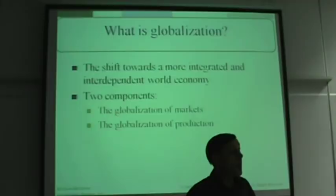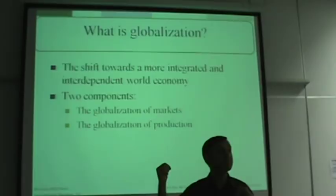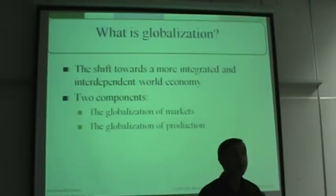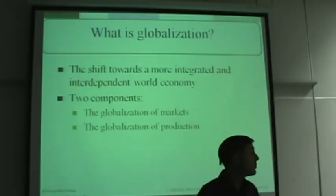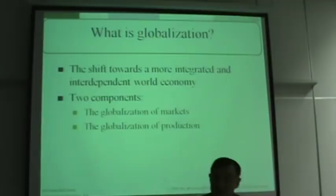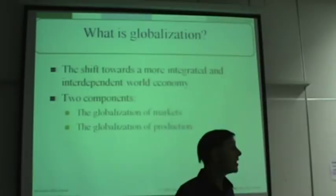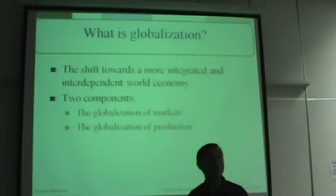Globalization makes one business dependent on another and makes the economy of one country dependent on another. For example, it makes Apple — the maker of the iPhone — very dependent on the chips produced by Samsung. You have a number of elements or components. One of them is globalization of markets — markets become global. You get to sell BMWs everywhere in the world, and Samsung gets to sell Galaxies all over the world.